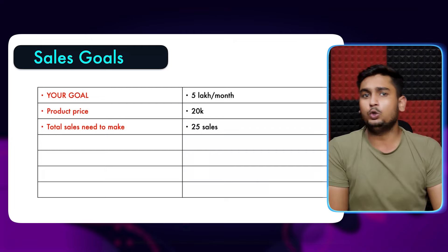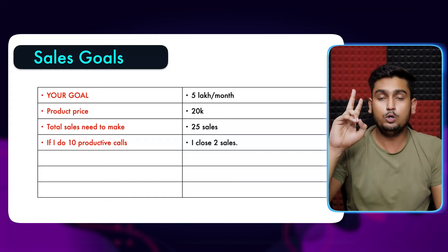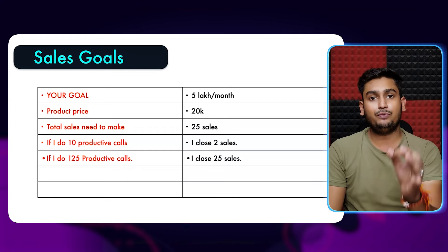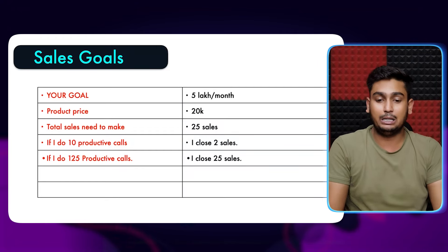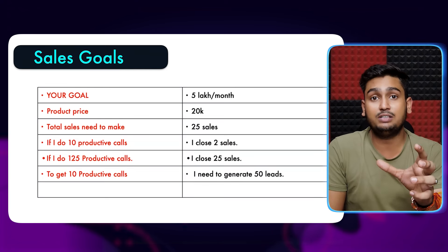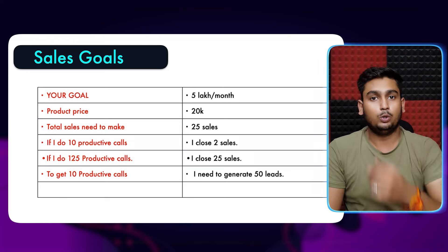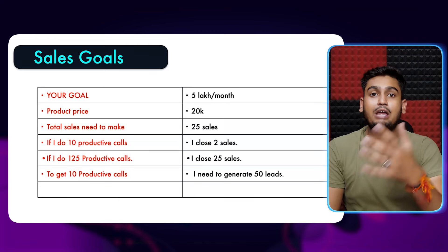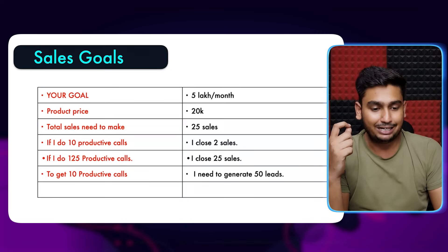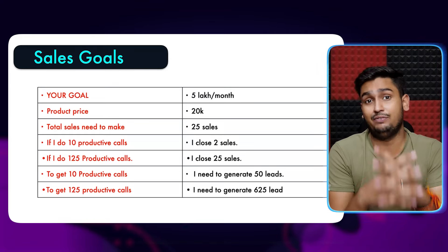If you have 10 productive calls, you will be able to close 2 sales. So if you want to make 25 sales, you need 125 productive calls. And not everyone will take up the call, so you need to generate at least 50 leads for every 10 productive calls. That means for 125 productive calls, I need to generate 625 leads — simple.